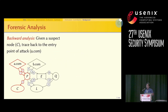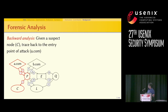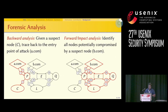To perform forensic analysis and find the entry point of an attack, we mark one of the nodes as suspicious and backtrack it to find the entry point. For example, if we mark node C as suspicious, we can backtrack it to the network address A.com.